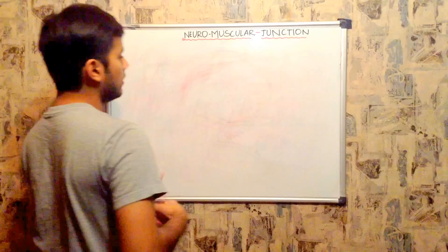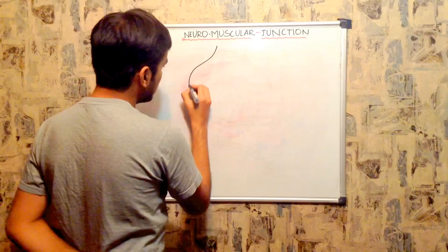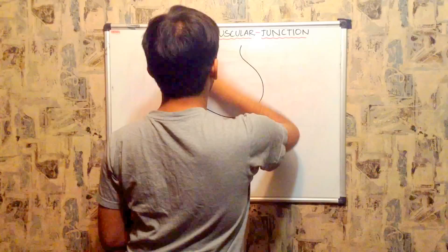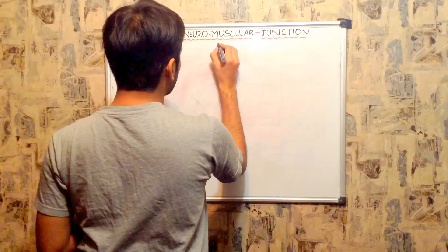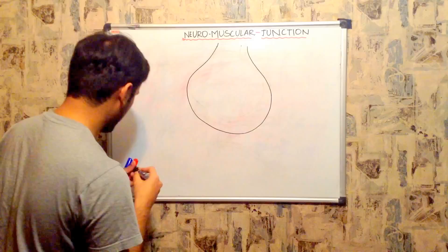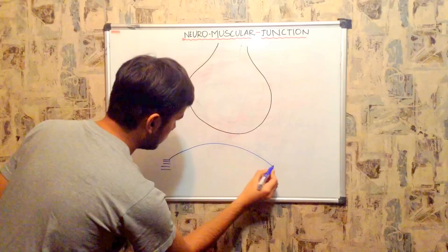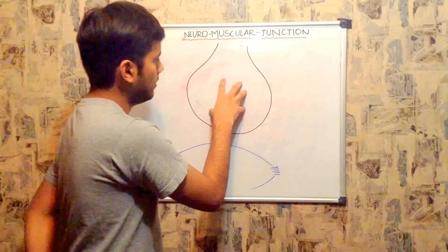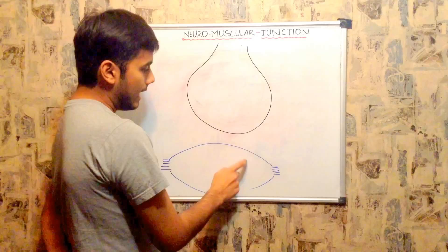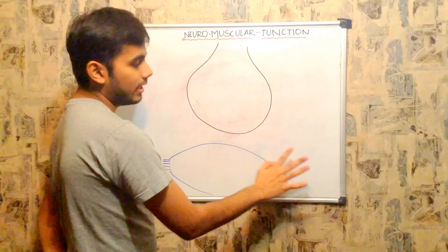First we'll draw the neuron or the nerve ending. I'm enlarging it and showing you. This is your nerve ending, and as I mentioned I'll draw the skeletal muscle. The junction between the neuron and the skeletal muscle — more appropriately, the junction between the nerve ending of a neuron and the skeletal muscle — is called the neuromuscular junction.